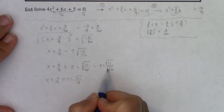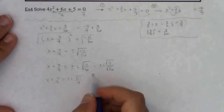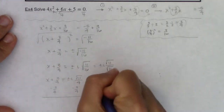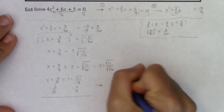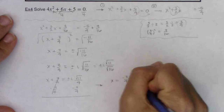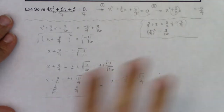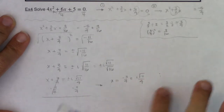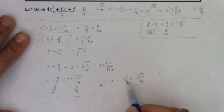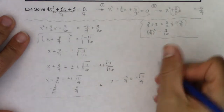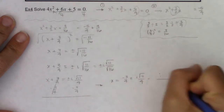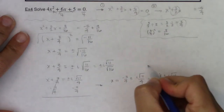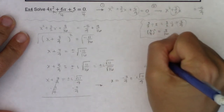So x plus 3 fourths equals plus or minus i times the square root of 11 over 16. I can rewrite this as plus or minus i times the square root of 11 over the square root of 16 — you're allowed to distribute a radical over division, but not over addition or subtraction. The square root of 16 is 4, so x plus 3 fourths equals plus or minus i times the square root of 11 over 4. Subtracting 3 fourths from both sides gives x equals negative 3 fourths plus or minus i times the square root of 11 over 4. These are both acceptable answers, and since they share a common denominator of 4, you can also write it as negative 3 plus or minus i root 11, all over 4.